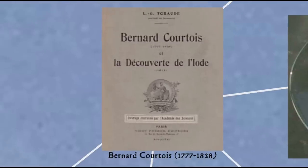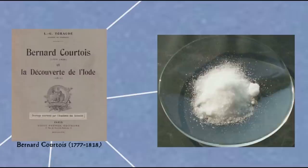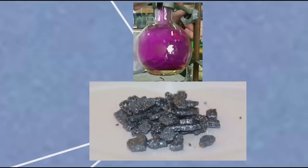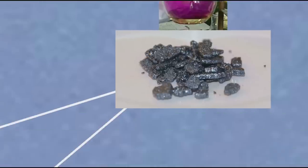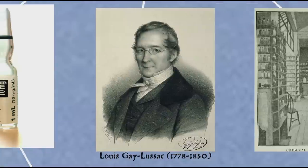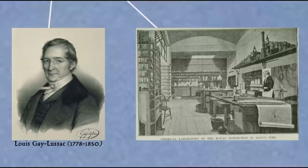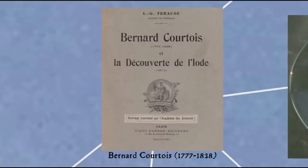Iodine was first discovered by French chemist Bernard Courtois, who was a producer of saltpeter, a component of gunpowder. Courtois accidentally produced iodine in the process of making saltpeter, figuring he'd discovered a new element, but lacked the funds to continue investigating it. So he gave out samples to other chemists including Gay-Lussac, who came up with the name and publicly announced the discovery. Meanwhile, Davy had gotten his hands on some iodine, experimented on it and noted its similarity to chlorine, and announced to the Royal Society that he'd identified a new element. An argument broke out between Gay-Lussac and Davy over who was first, but both men gave credit to Courtois for being the first to isolate it.